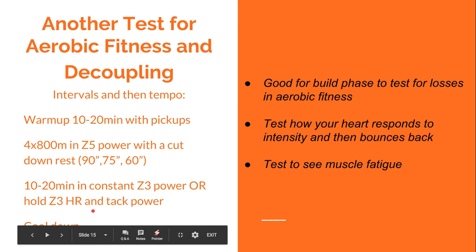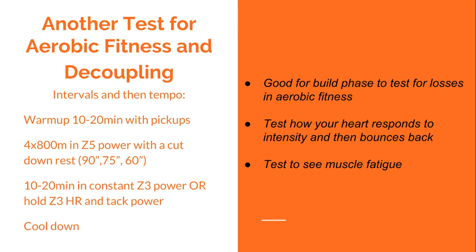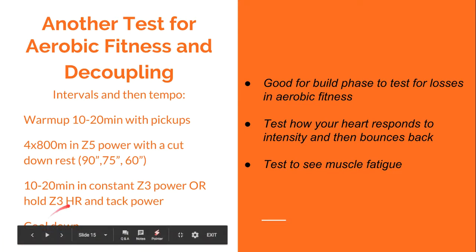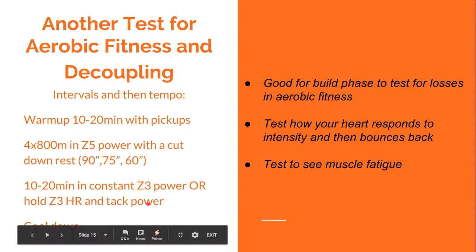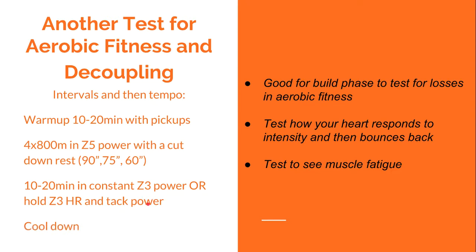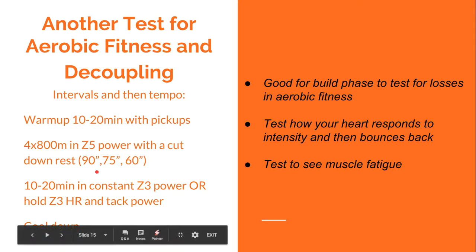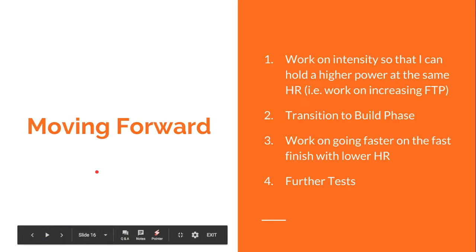You can also try it in reverse — hold zone 3 heart rate and track where your power goes — though I prefer holding steady power and watching heart rate. This test is good for build phases: it tests how your heart rate responds to intensity and then bounces back. The tempo section is a good indicator of how aerobically fit you are, how well you recovered from the higher intensities, and how much glycogen you used and fatigue you built up in those 4 by 800s.